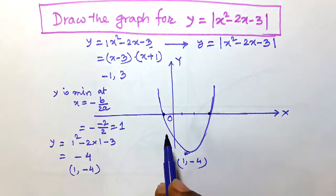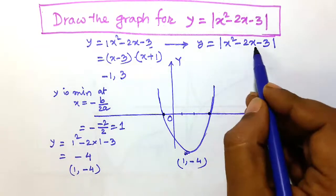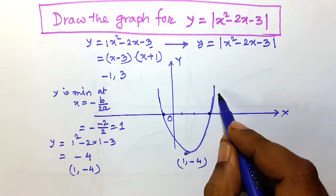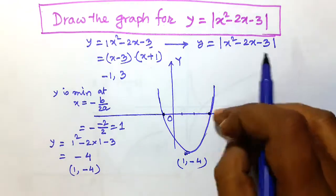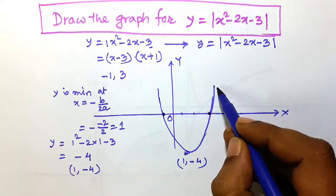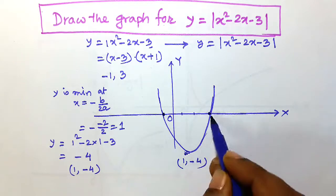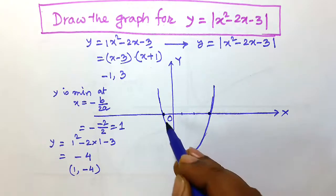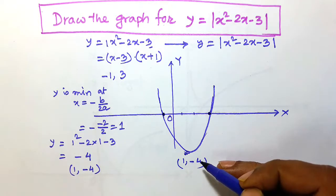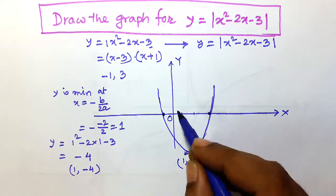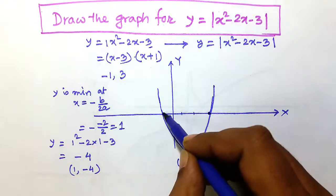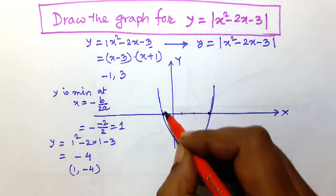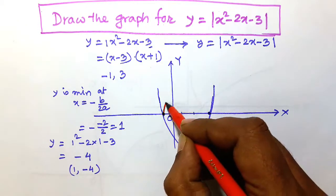Now, how to draw y is equal to modulus of x squared minus 2x minus 3. The steps are: leave the positive parts of y equals x squared minus 2x minus 3 as they are — these two outer parts remain as usual. Then take the image of the negative part, which is the part below the x-axis, with respect to the x-axis taking it as the mirror.